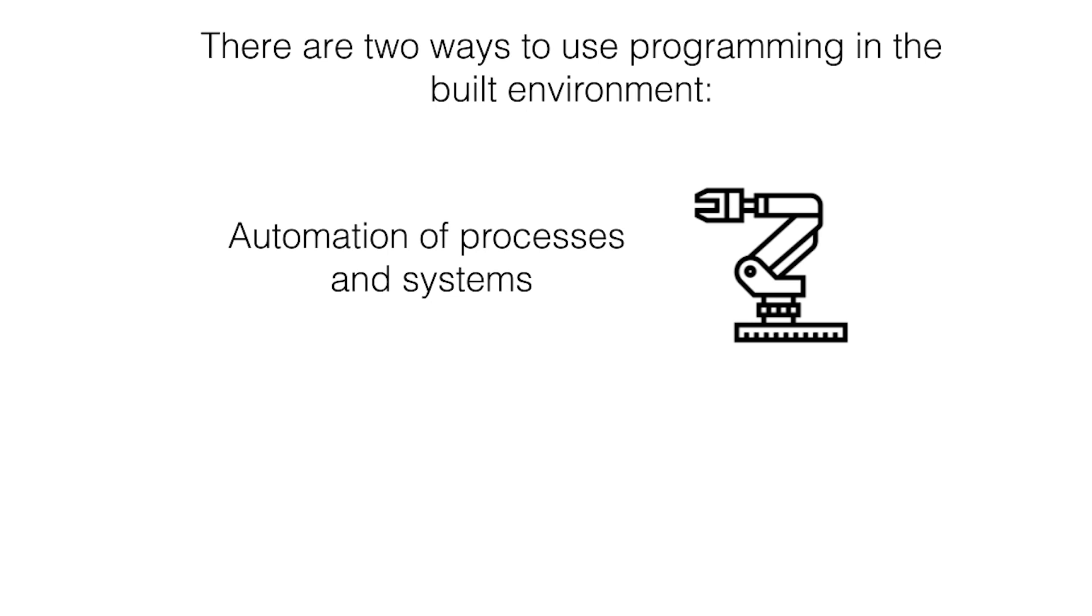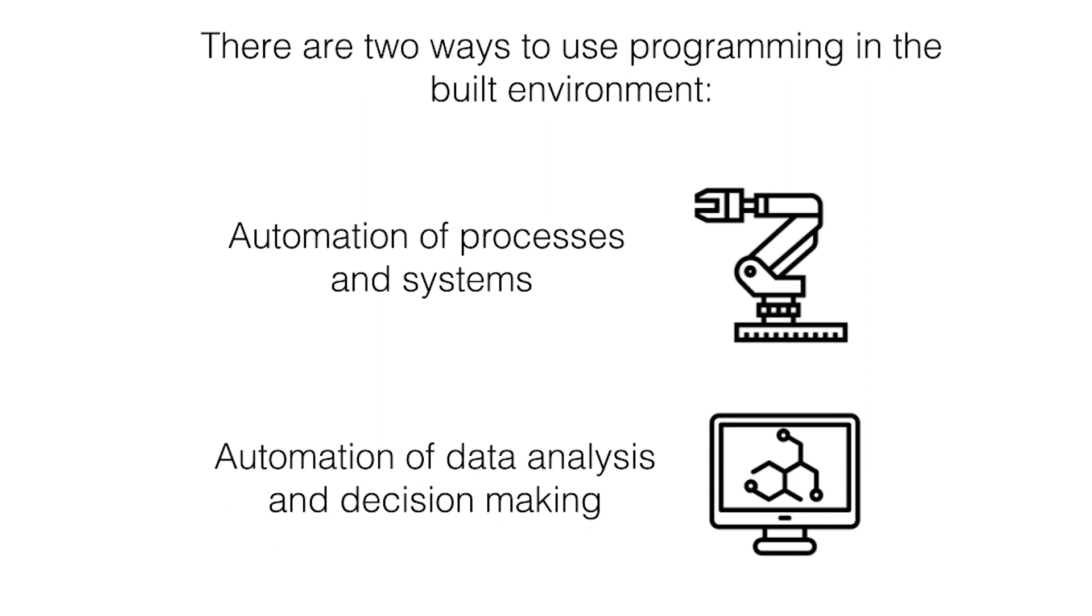The second way of using programming is for the automation of data analysis tasks and decision making. This is where you're using code to take raw data and transform it for a certain objective. In this course, we're going to focus on this second type of coding.